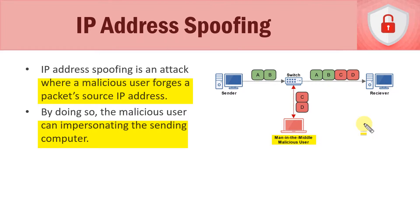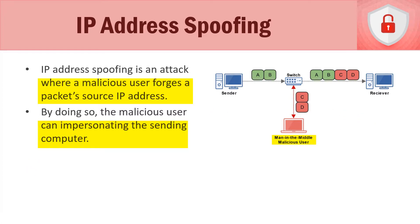This can be used as a vector to inject malicious code into the receiver, or simply to provide them false information. That's IP address spoofing. In summary, we talked about protocol spoofing attacks — specifically ARP spoofing, DNS spoofing, and IP address spoofing. If you have any questions about this lecture, please let me know. Thanks for watching, and I'll see you at the next video.